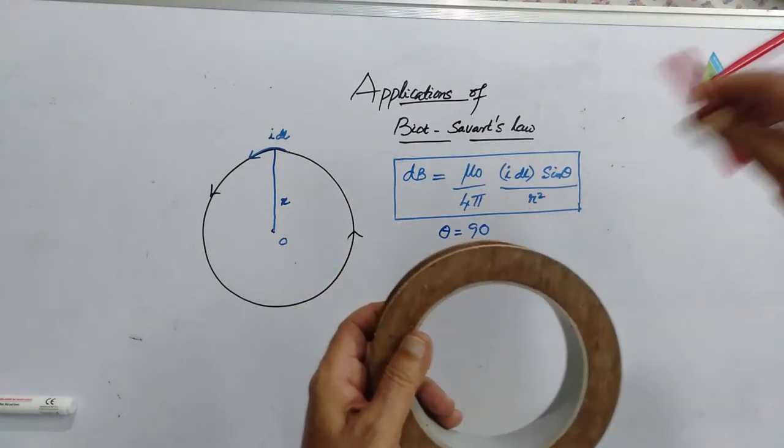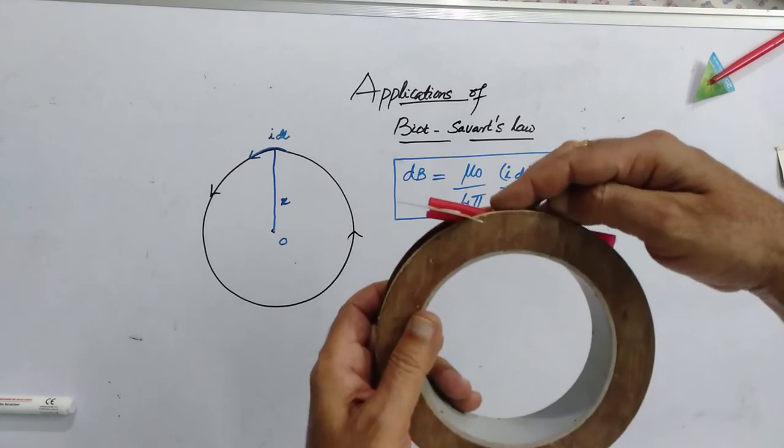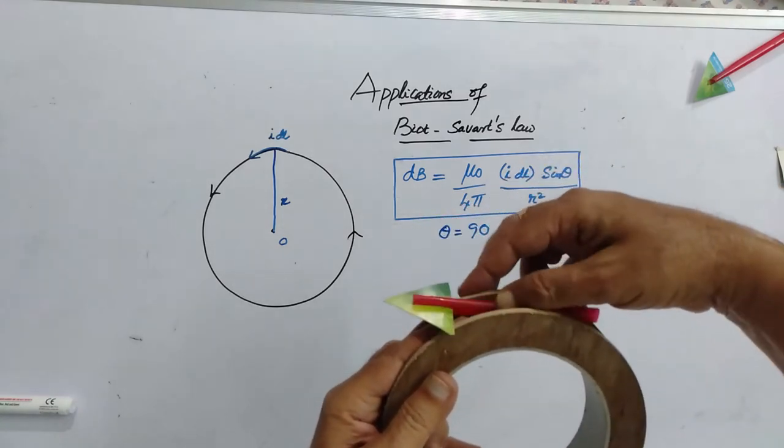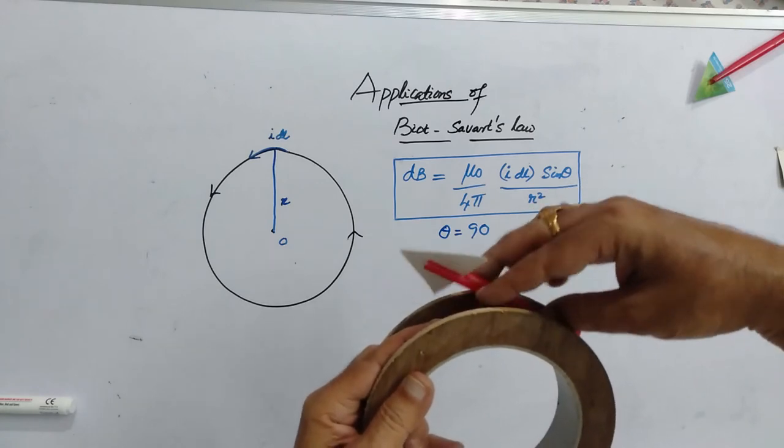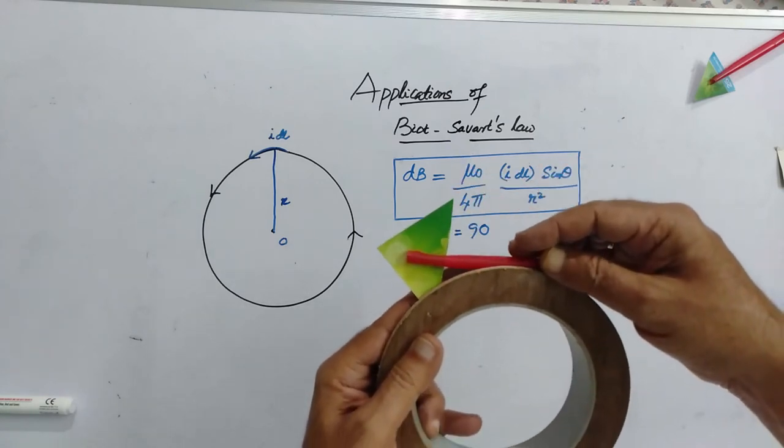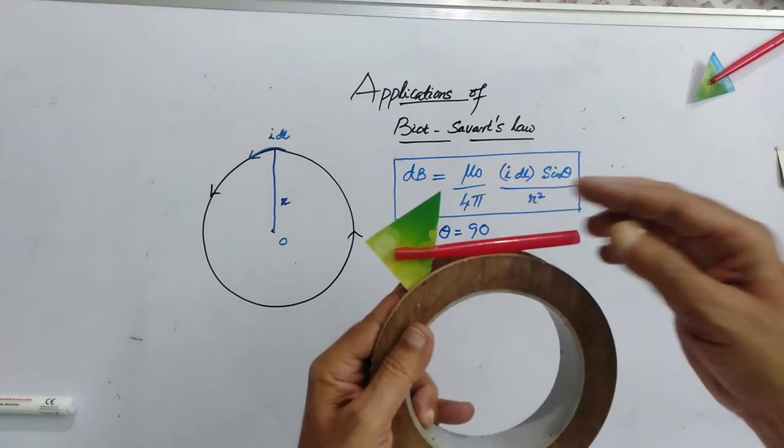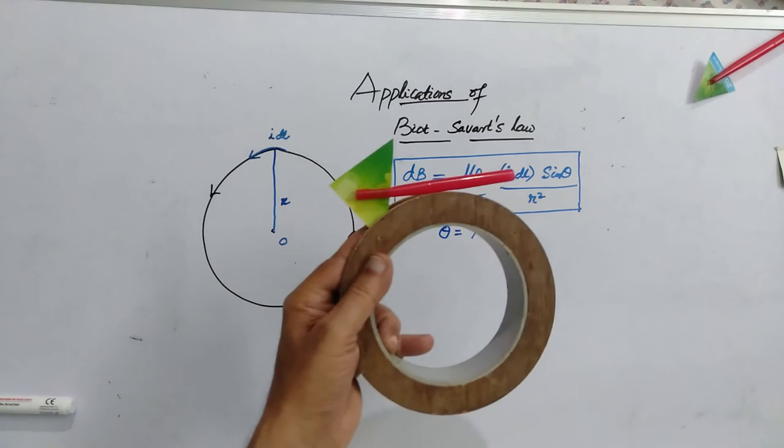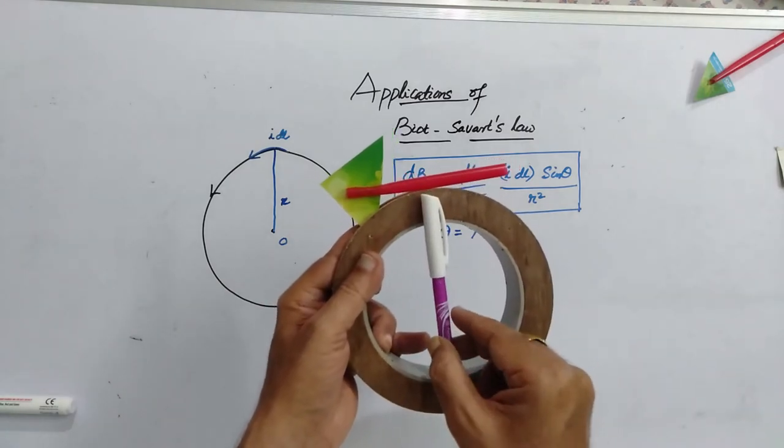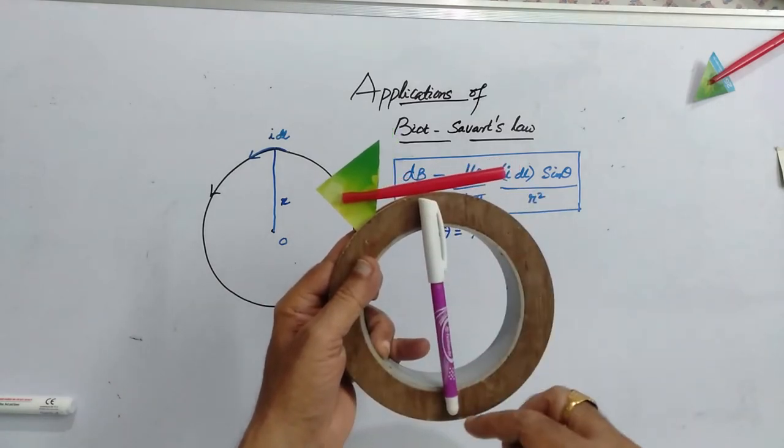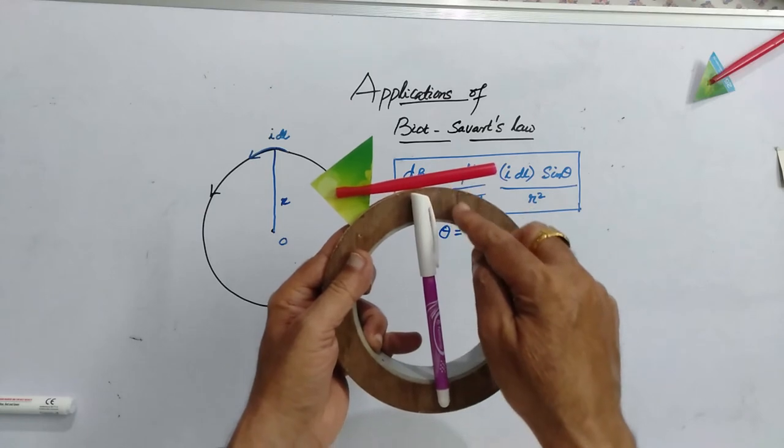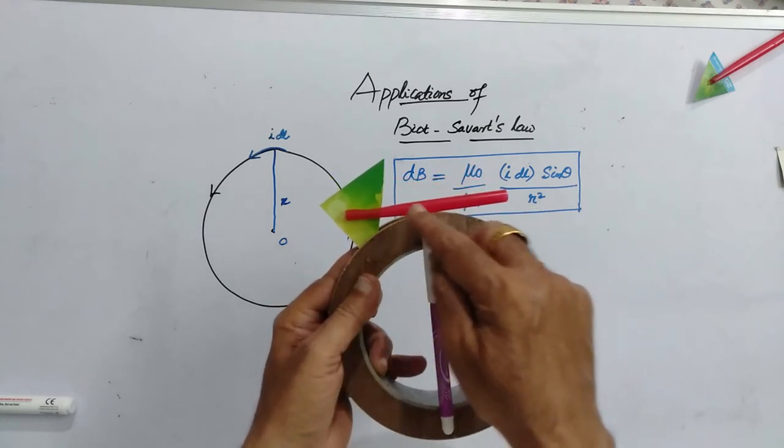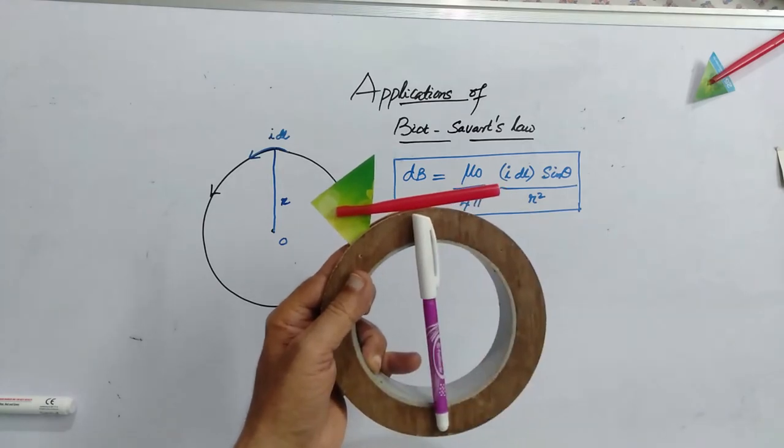This vector shows the direction of current element and this is the diameter. So, this angle you have to take. This angle is always 90 degrees.